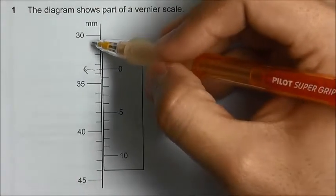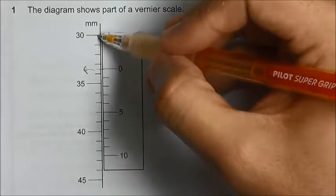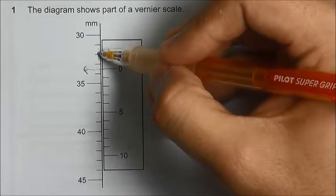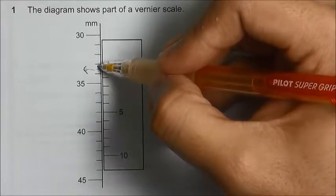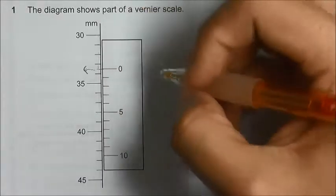we read from the main scale. This is 30, this is 35, so this will be 31 mm, 32, 33. So it's 33 mm point something, plus this small part here. So we write down